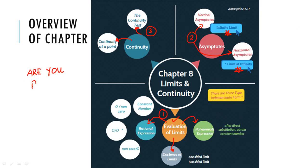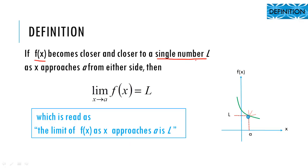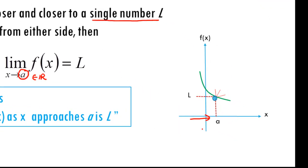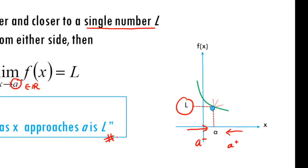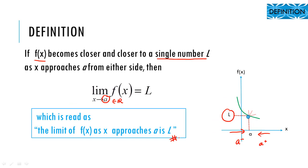Are you ready? Definition: if f(x) becomes closer to a single number L when x approaches a from the left or right side, where a is any real number. Looking at the diagrams, approaching a from the left is denoted as a minus, and approaching from the right is denoted as a plus. By looking at the curve, the two-sided values will stop at y equal to L. So we say that the limit as x approaches a is L.